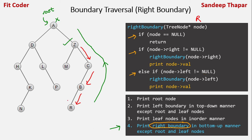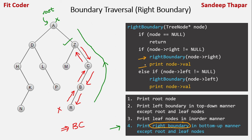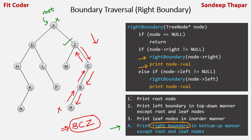Since R is a leaf node, the if-else conditions skip its printing. The call to R ends and we return to B, where we now print B. Then we return to C and print C. Then we return to Z and print Z. This completes the right boundary, excluding the root and leaf nodes. The combination of all four steps gives us the complete boundary traversal.